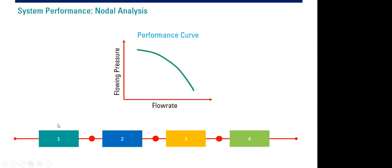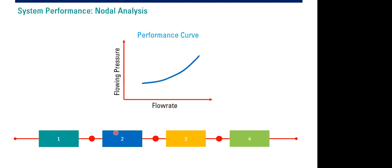If we highlight on the first part, this block or element has a performance curve. If you are studying petroleum engineering, chemical engineering, or mechanical engineering, you are familiar with performance curves. For example, if you have a pump, the performance of the pump can be described with a performance curve. The performance of block one can be described by this performance curve, where the vertical axis is the flowing pressure and the horizontal axis is the flow rate.